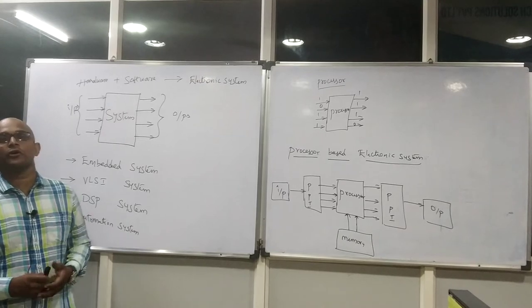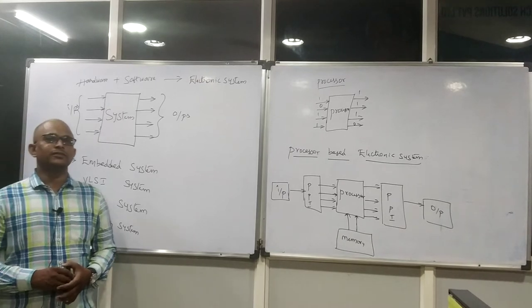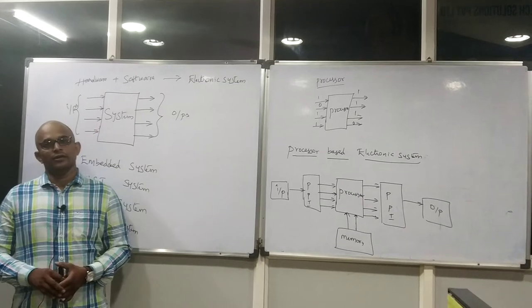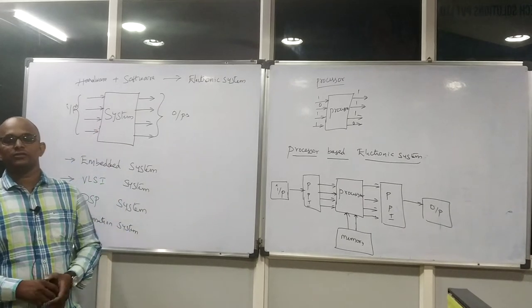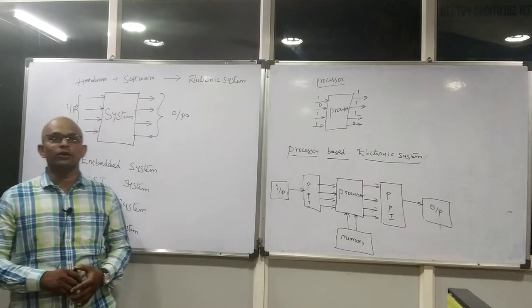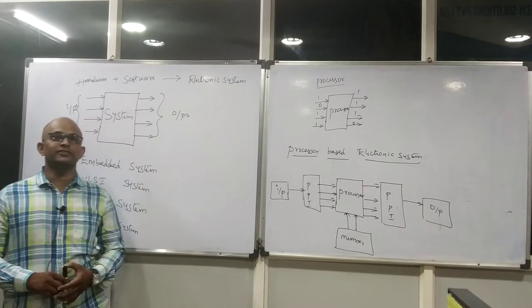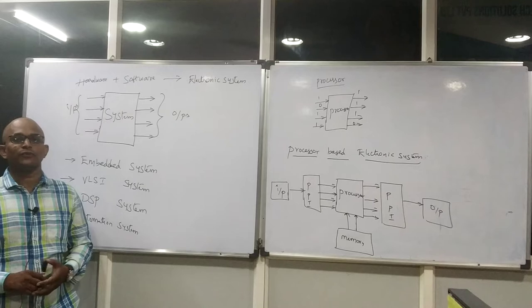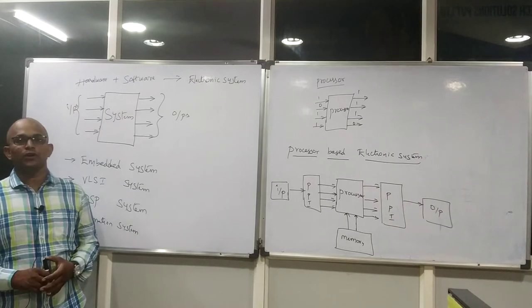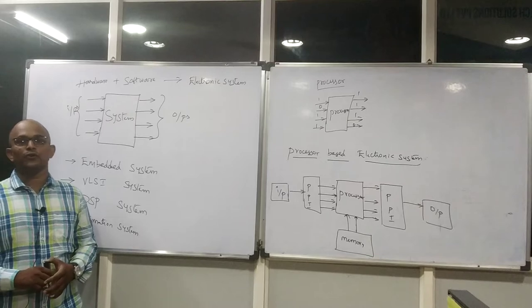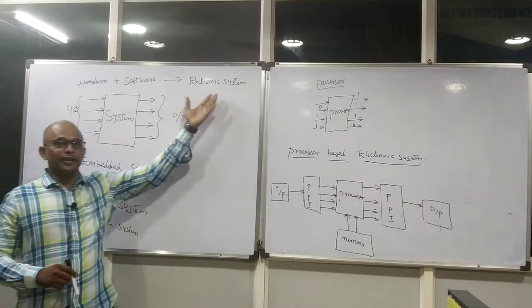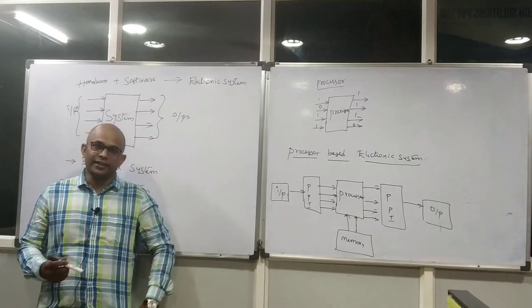First of all, what is an electronic system? Any system, right from a calculator to an industry level product, you will find two combinations which are very clear: hardware and software. I think you may have heard the basic definition of embedded system, which is a combination of hardware and software. This electronic system has different categories.